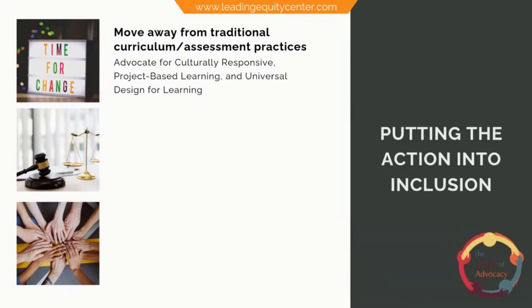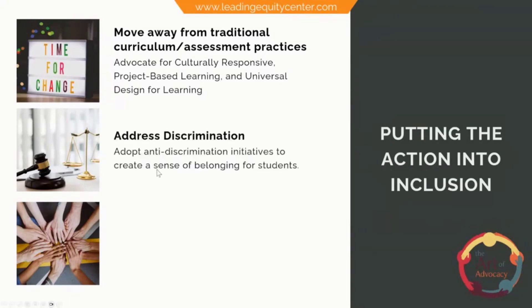The next strategy is to address discrimination. Your students want to see action, not just words. If you do not already have an anti-discrimination initiative, please put one in place. You need to have a racial equity policy — it's one thing to have an anti-bullying policy, but it is not the same when it comes to discrimination and racism.